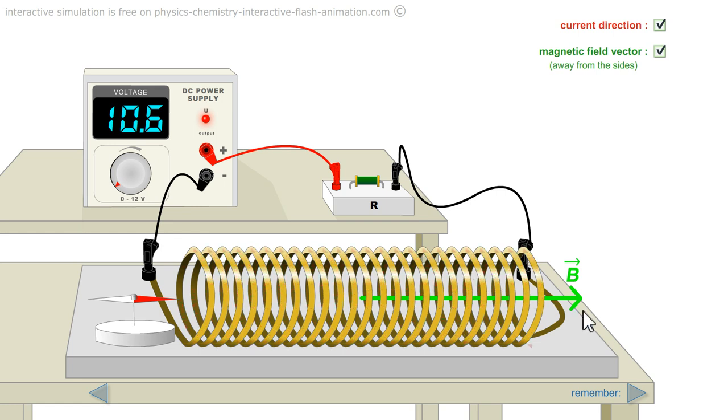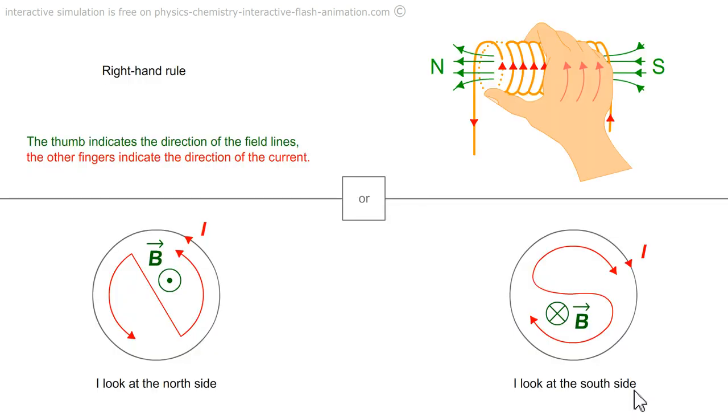This means that the direction of winding of the turns is important. What matters is the direction of rotation of the current.